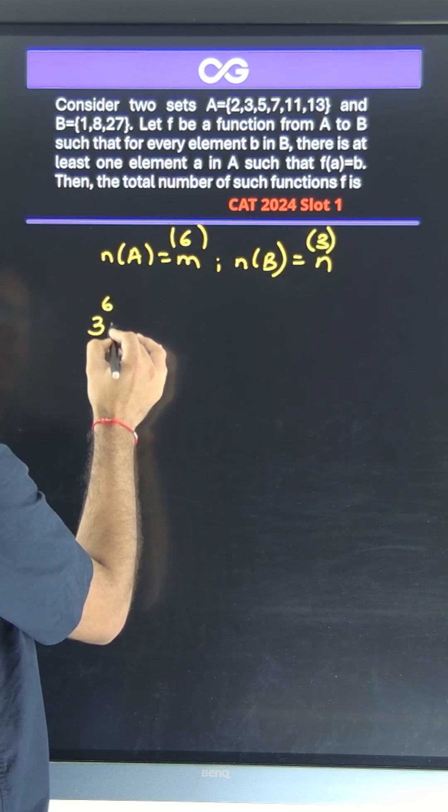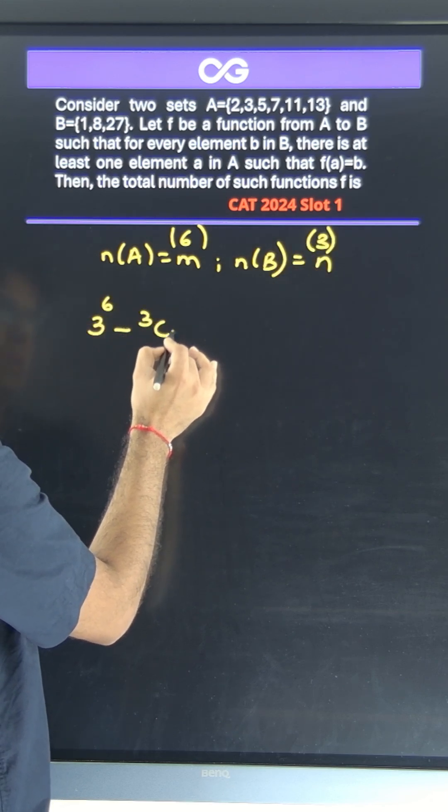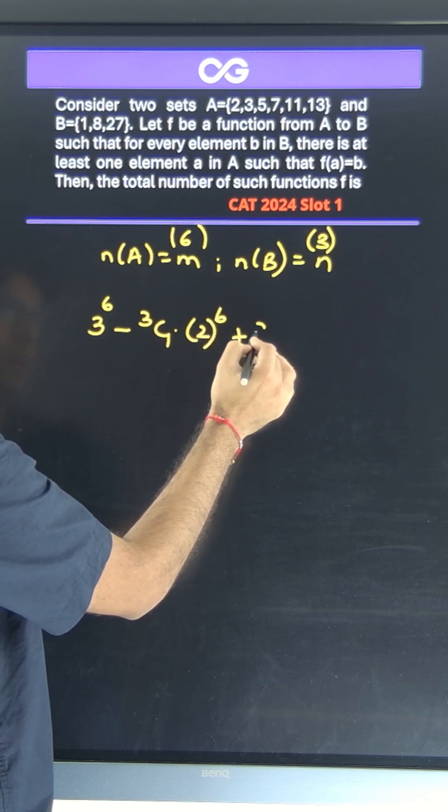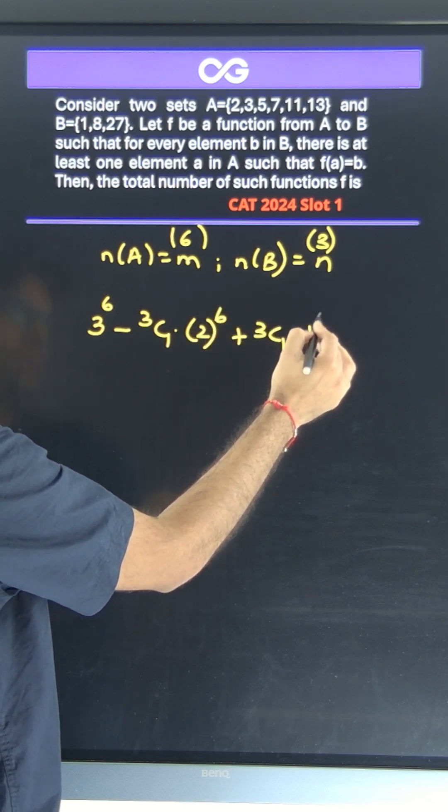So I'll directly write the formula: 3 to the power 6 minus 3C1 times 2 to the power 6 plus 3C2 times 1 to the power 6. That's it.